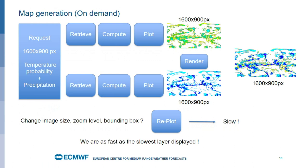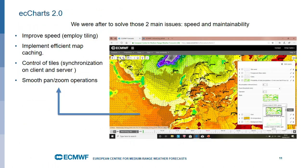Ten years ago that was working fine when the data sizes were manageable, but it's very slow at the moment because of the resolution increase. Also, if you change the image size, zoom level, or bounding box, we have to do the plotting again. The retrieval and computation are applied at the global level, so they are cached on the first request. But the plotting has to be done again and again because we don't have a tiling concept. We are always as fast as the slowest layer — if you have an expensive layer requiring lots of data retrieval and computation, that determines the overall speed.